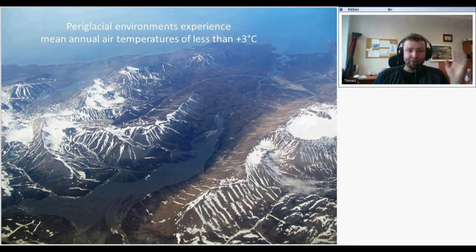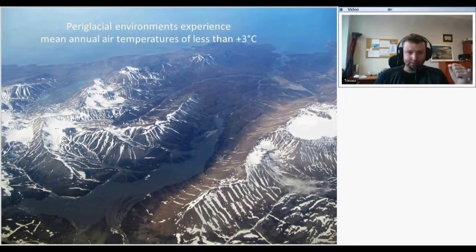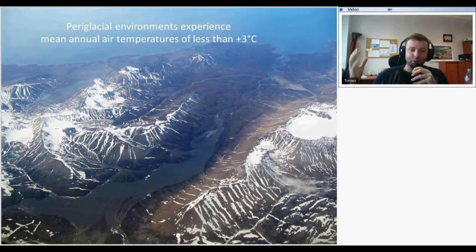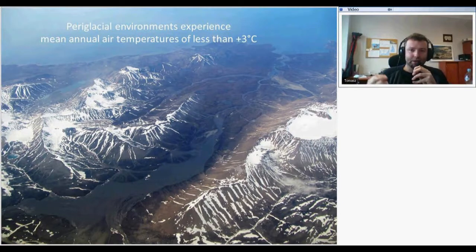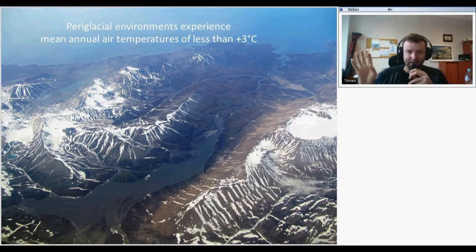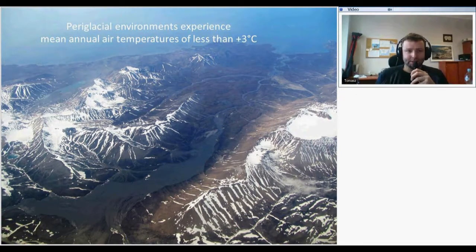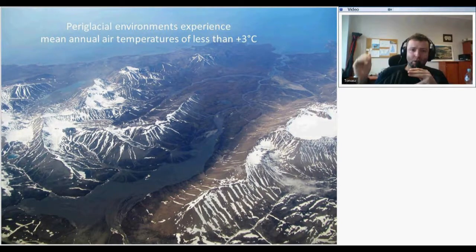These periglacial environments experience mean annual air temperatures of less than plus 3 degrees. It means that during winter it is lower than 0 degrees, and during summer it is usually not higher than around 3 to 5 degrees centigrade. The lower the temperatures, the more different processes happen in those areas — especially changes between freezing and thawing influence how they look.